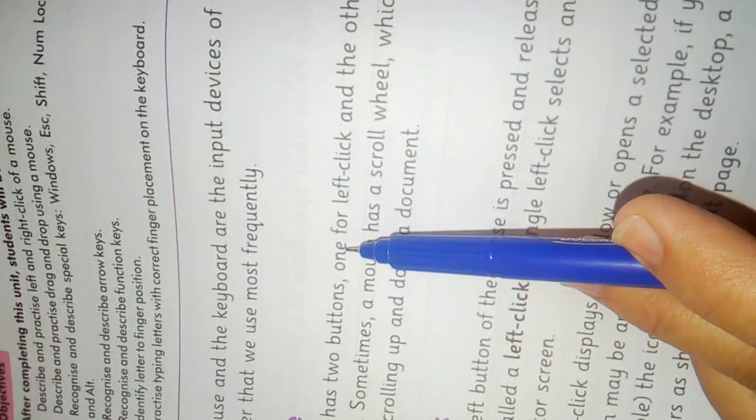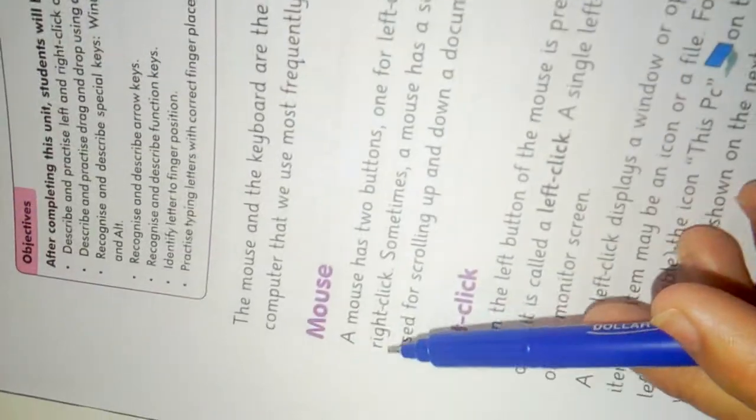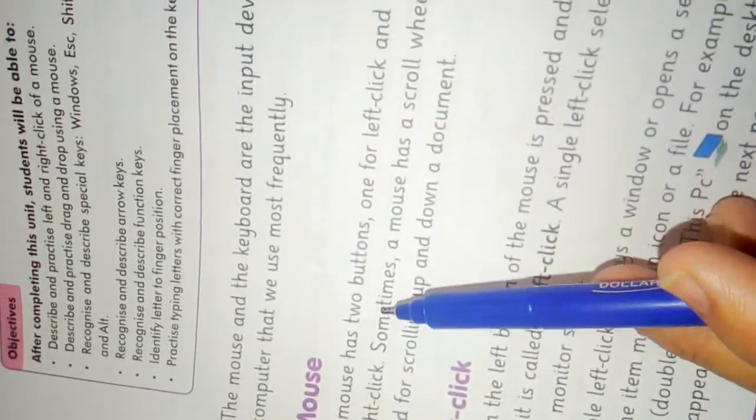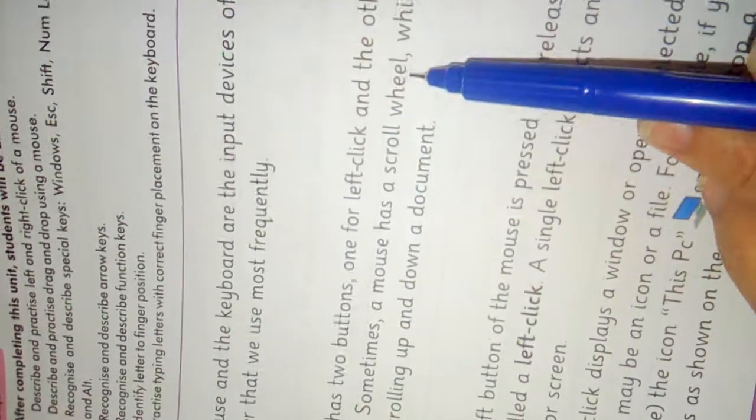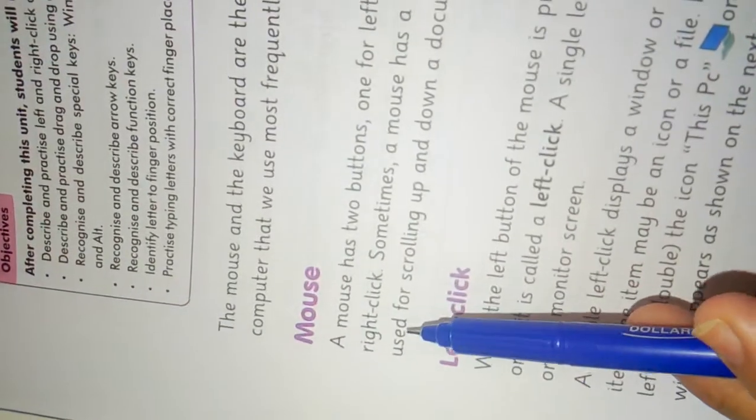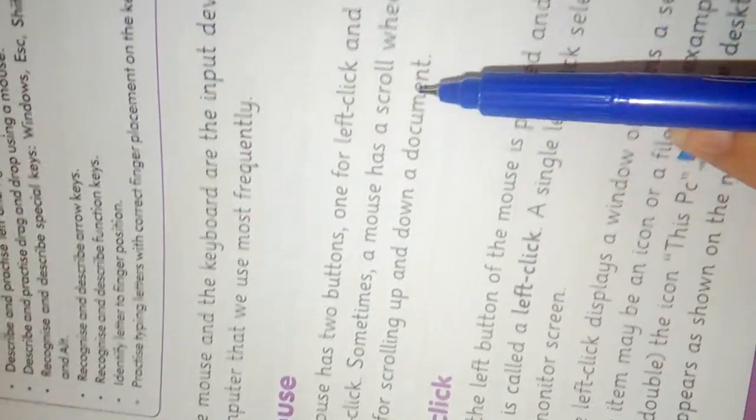A mouse has two buttons: one for the left click and the other for right click. Sometimes a mouse has a scroll wheel which is used for scrolling up and down a document.